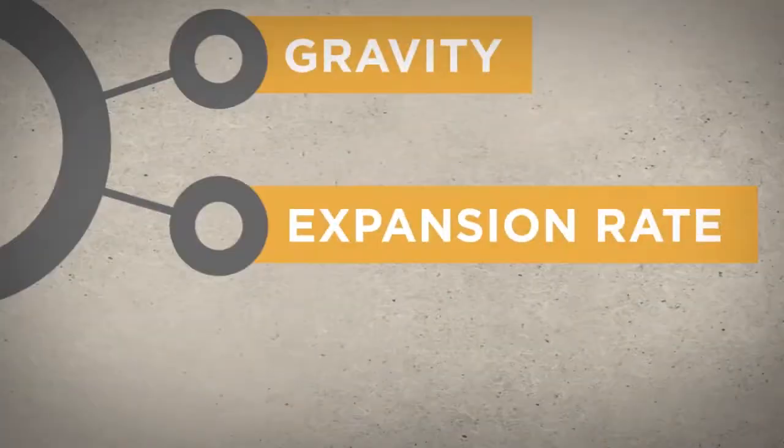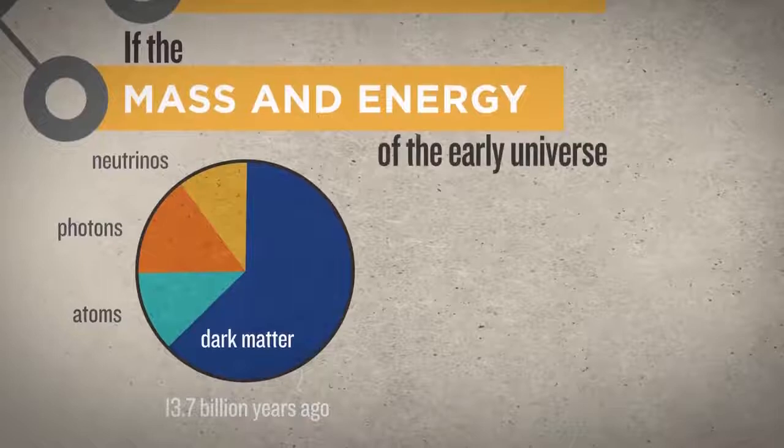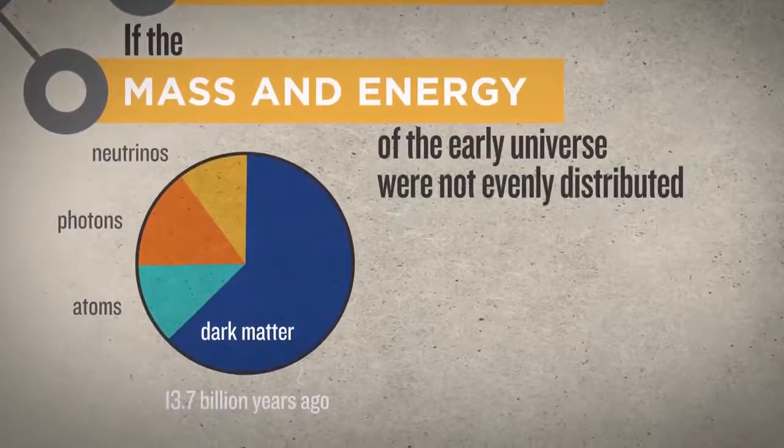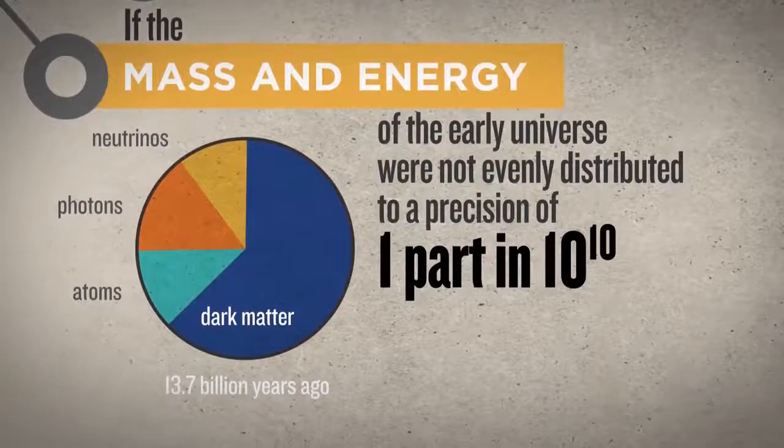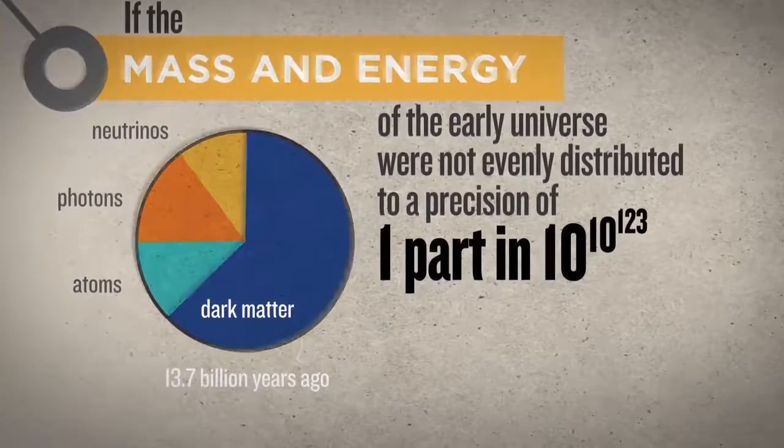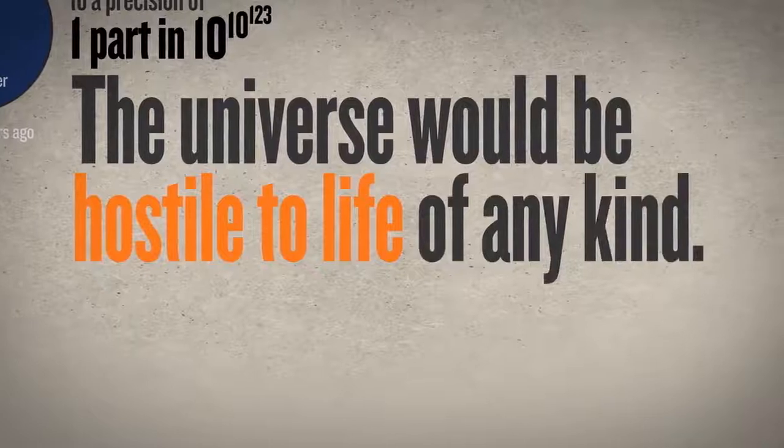Or another example of fine-tuning. If the mass and energy of the early universe were not evenly distributed to an incomprehensible precision of one part in 10 to the 10 to the 123rd, the universe would be hostile to life of any kind.